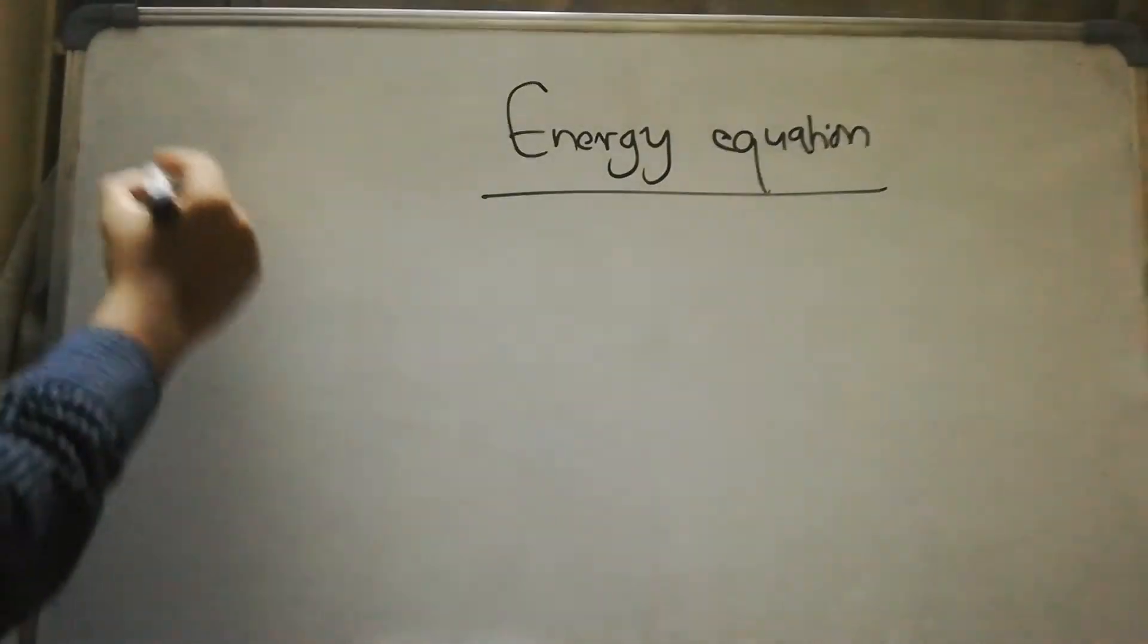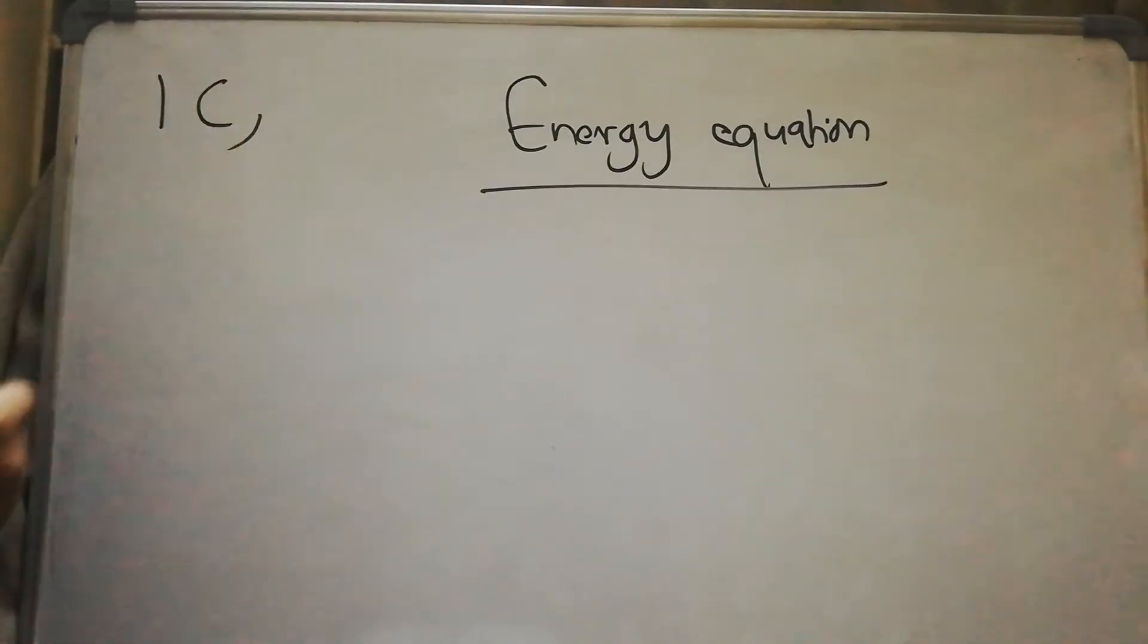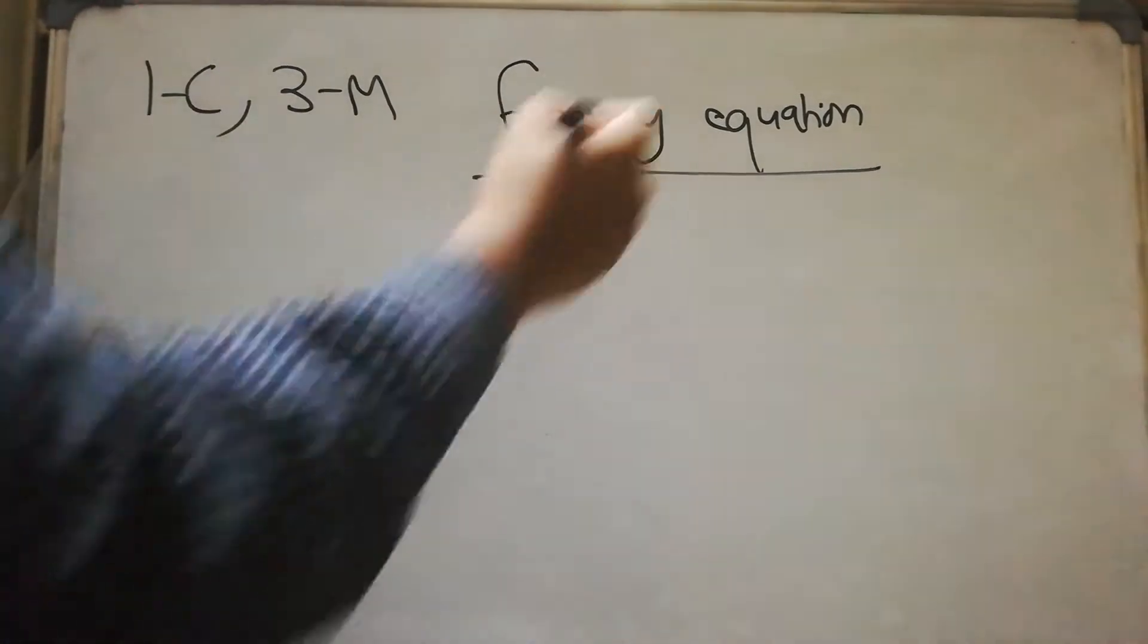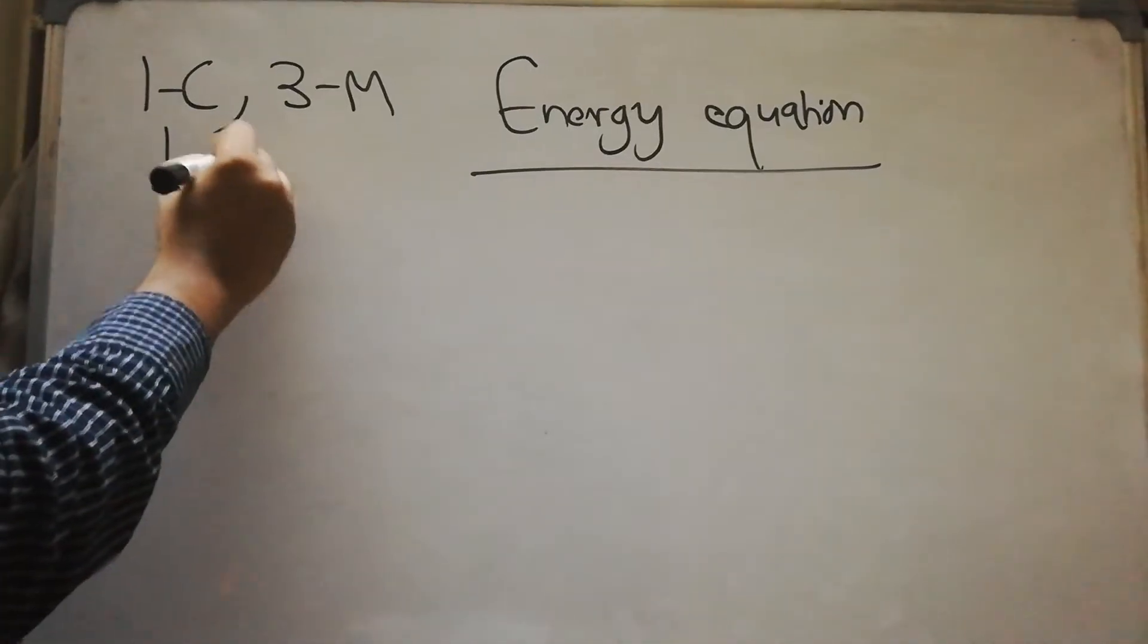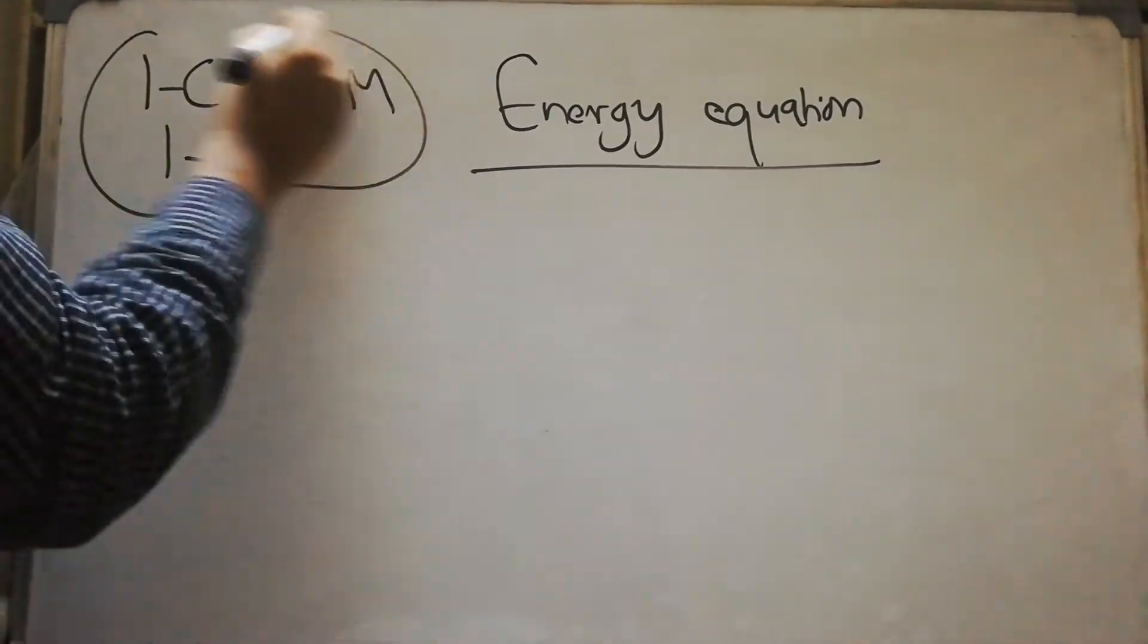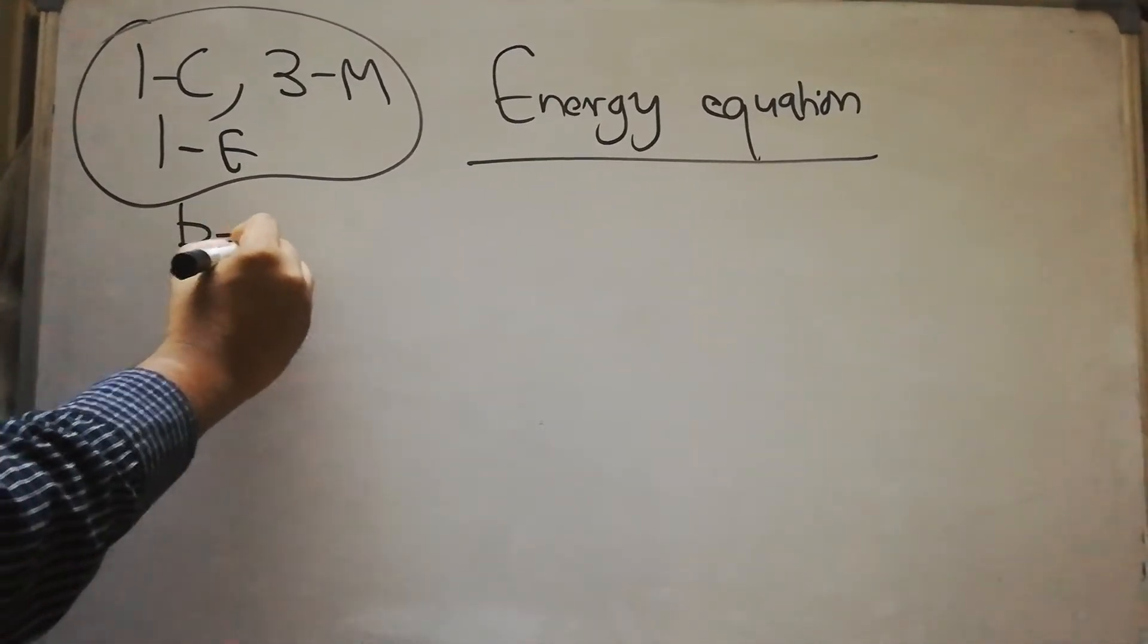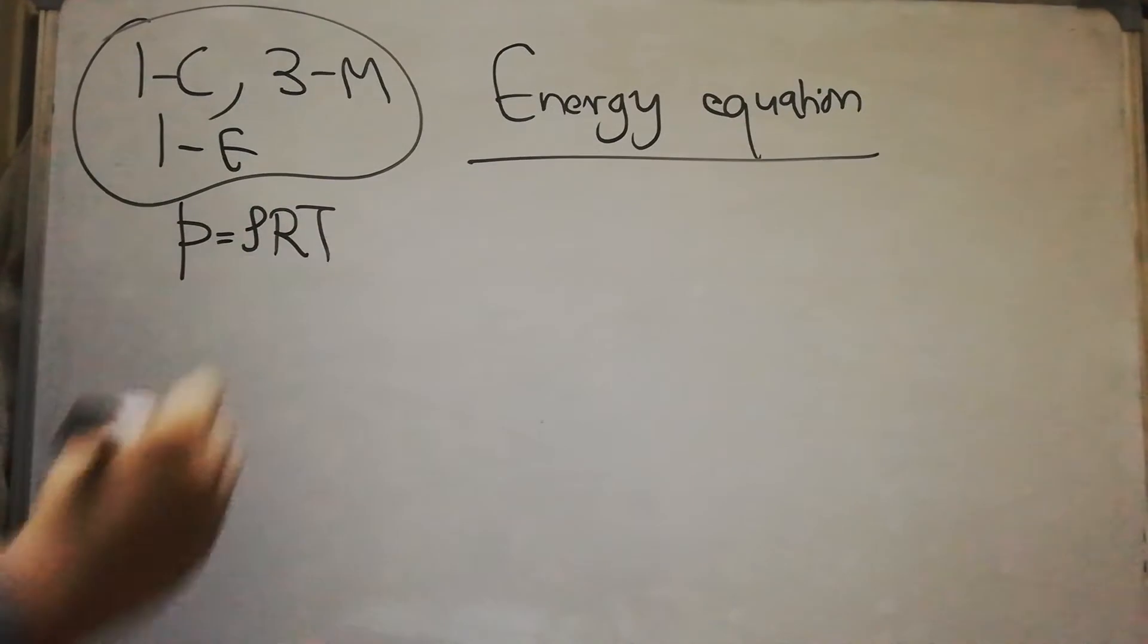We have obtained one equation for continuity, three equations for momentum, and finally we will be getting one equation for energy. Then we close this set of governing equations with the equation of state if it is for compressible flows.